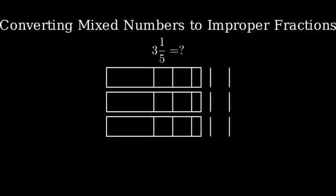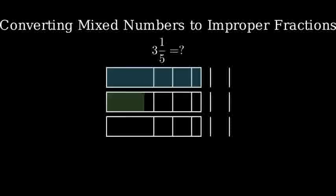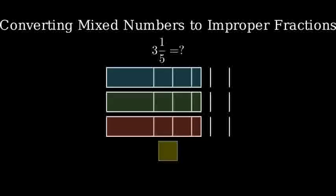Let's count how many fifths we have in total. In the first whole, we have five fifths. In the second whole, we have another five fifths. In the third whole, we have another five fifths. And then we have one more fifth from our mixed number.